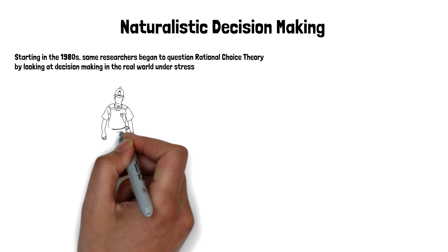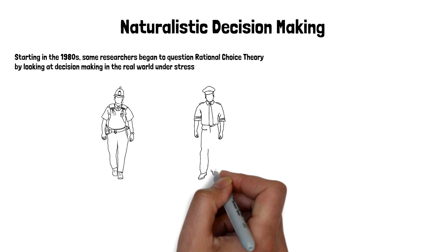My colleagues working in the area of naturalistic decision-making, we began our efforts in the 1980s. We began to question that theory because we were looking at how people made decisions in natural settings, in real-world settings under time pressure.